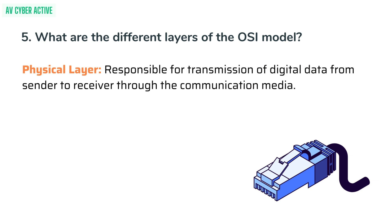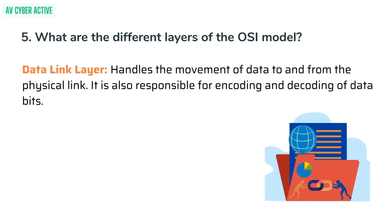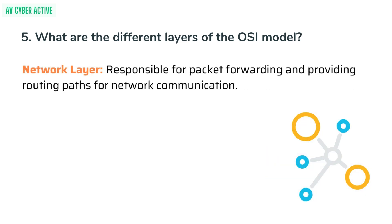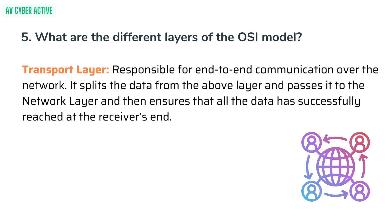Physical layer: responsible for transmission of digital data from sender to receiver through the communication media. Data link layer: handles the movement of data to and from the physical link, and is responsible for encoding and decoding of data bits. Network layer: responsible for packet forwarding and providing routing paths for network communication. Transport layer: responsible for end-to-end communication over the network; it splits data from the layer above, passes it to the network layer, and ensures all data has successfully reached the receiver's end.